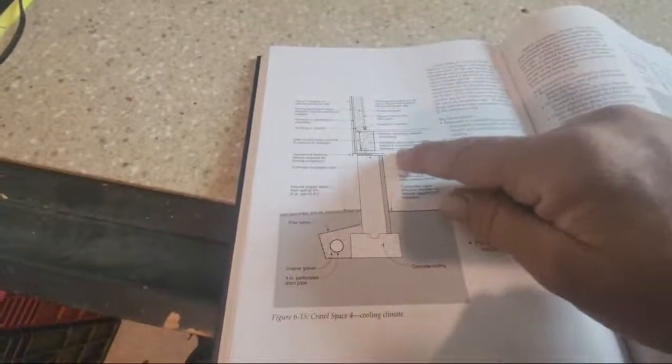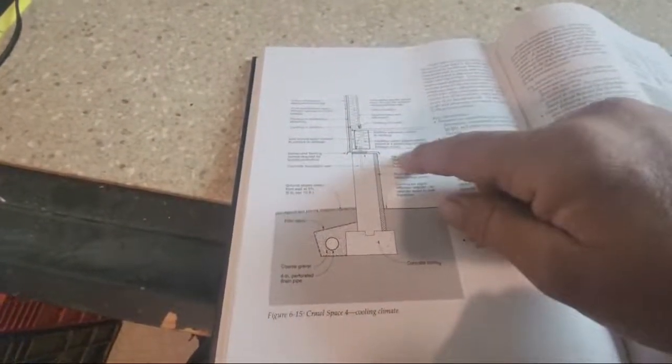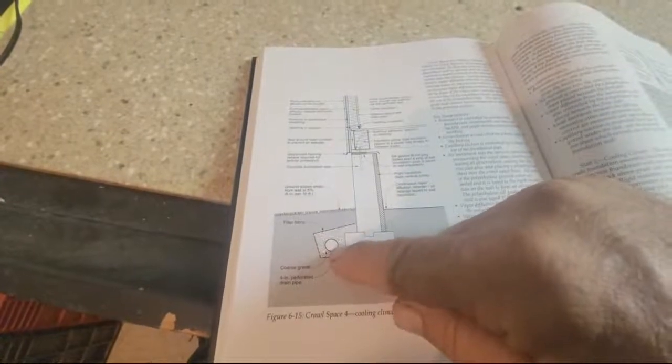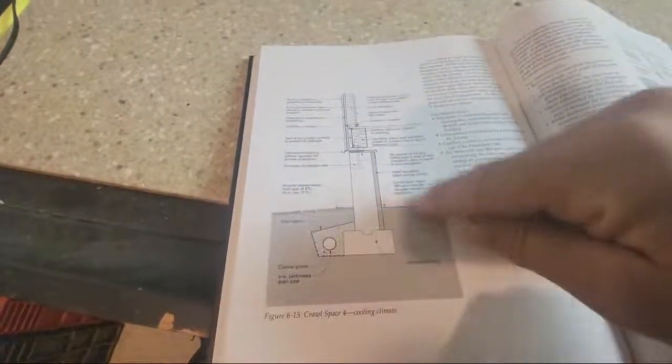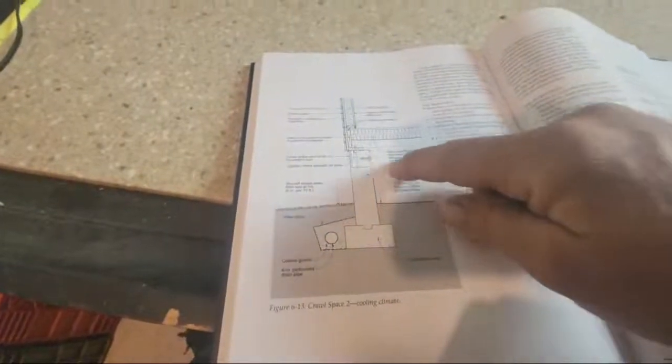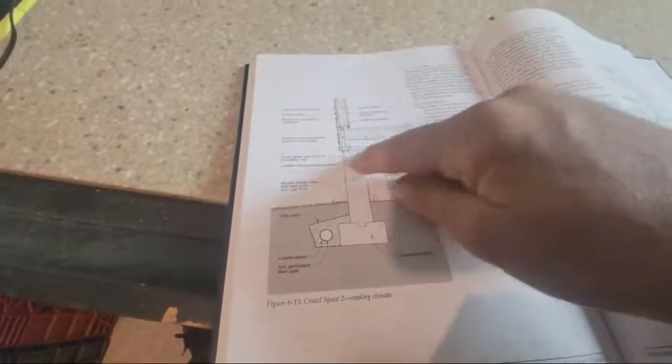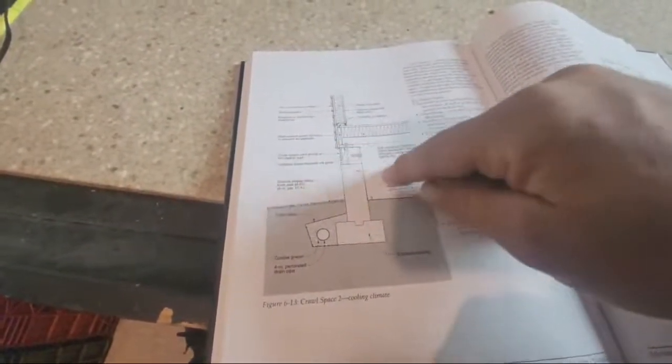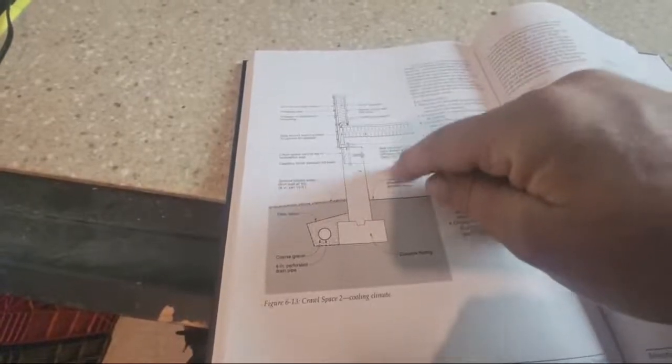If this doesn't work, the drain tile doesn't work, or the grading isn't good, water gets in here and it can't dry. With the vented one, at least if water got in here, it can dry. I'm not saying I like this one, but it could tolerate some moisture because you've got communication to the unconditioned exterior.